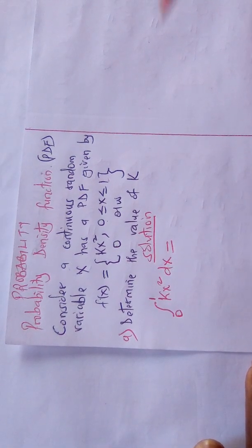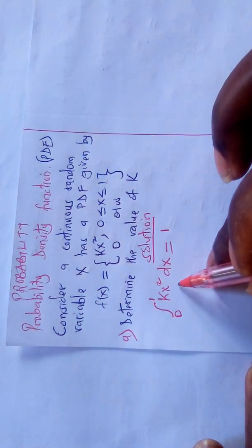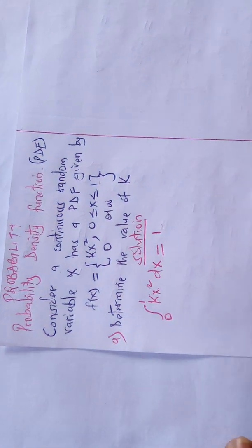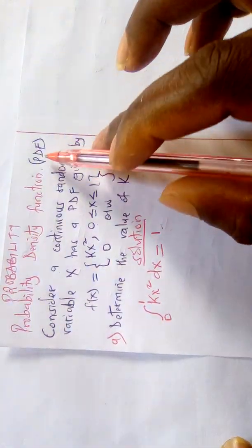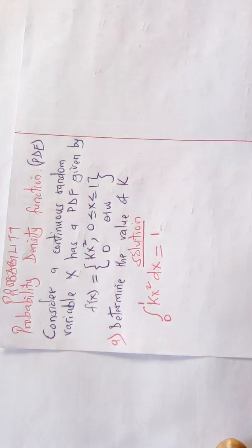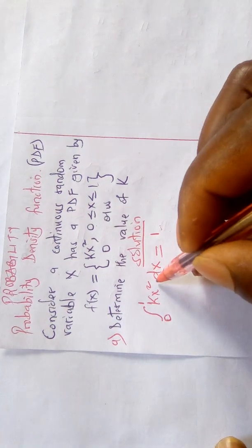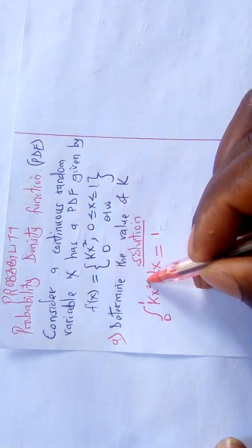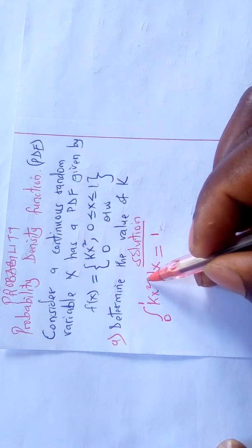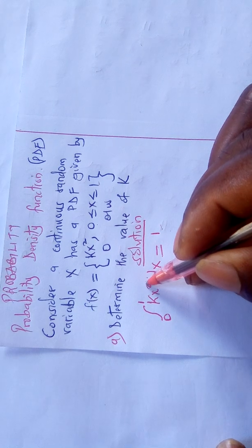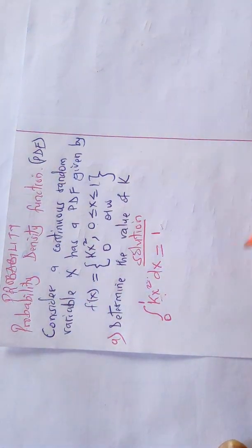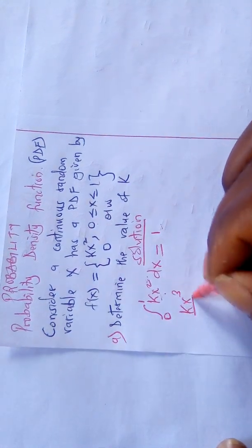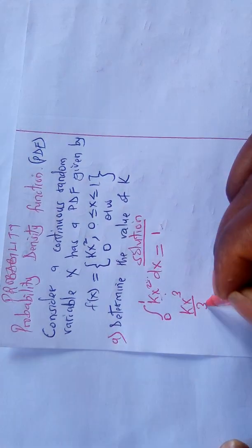Under PDF, a very important concept: the total probability must equal 1. The summation — specifically under integration for PDF — the total probability must be 1. After that, you integrate kx squared with respect to x by adding 1 to the power: 2 plus 1 gives 3.